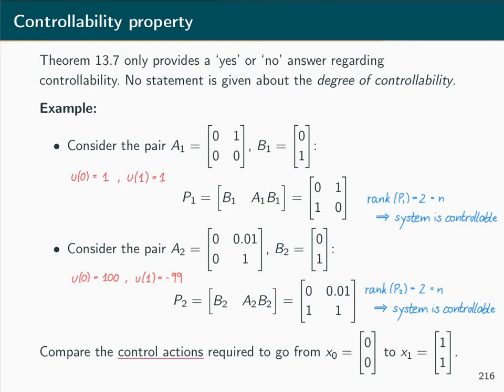System 1 requires relatively modest control values, whereas system 2 requires very high control values to transfer the state in certain directions. This is due to the relatively small entry of 0.01 in the system matrix: if it converged to 0, the system would become uncontrollable. So in some intuitive sense, system 2 is somehow close to being uncontrollable.